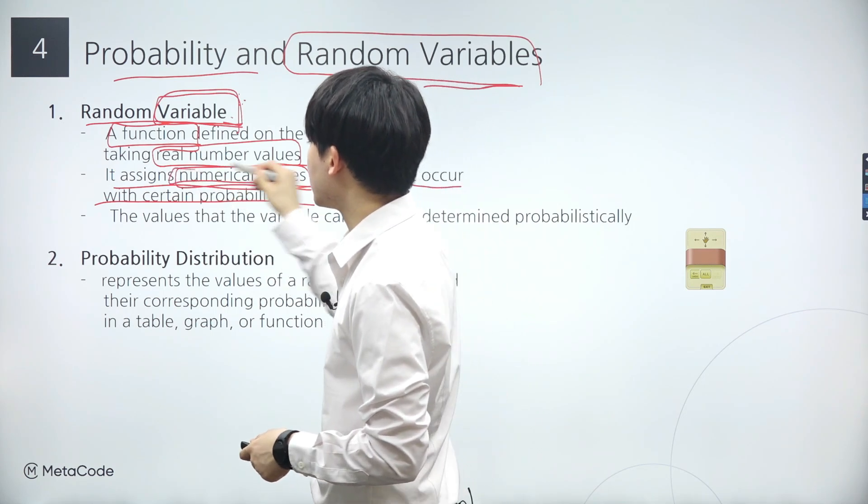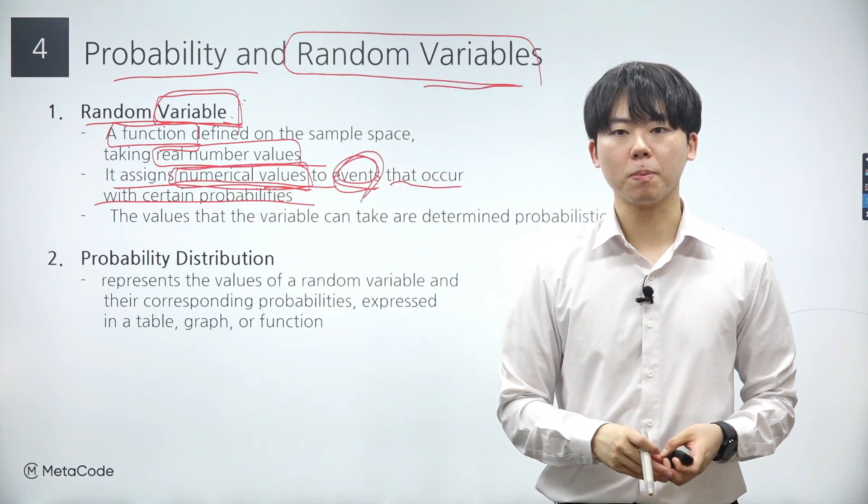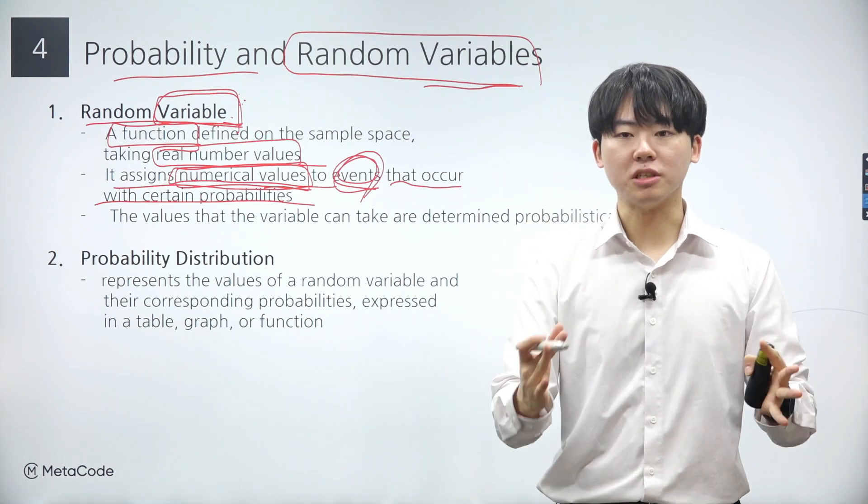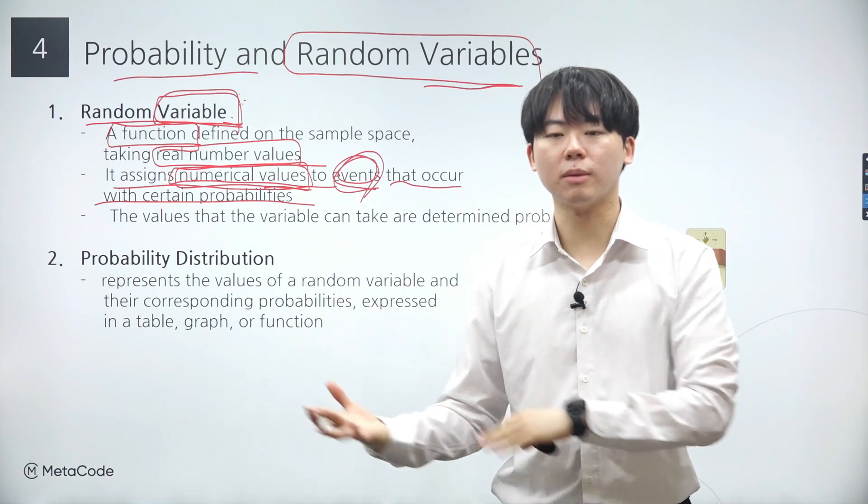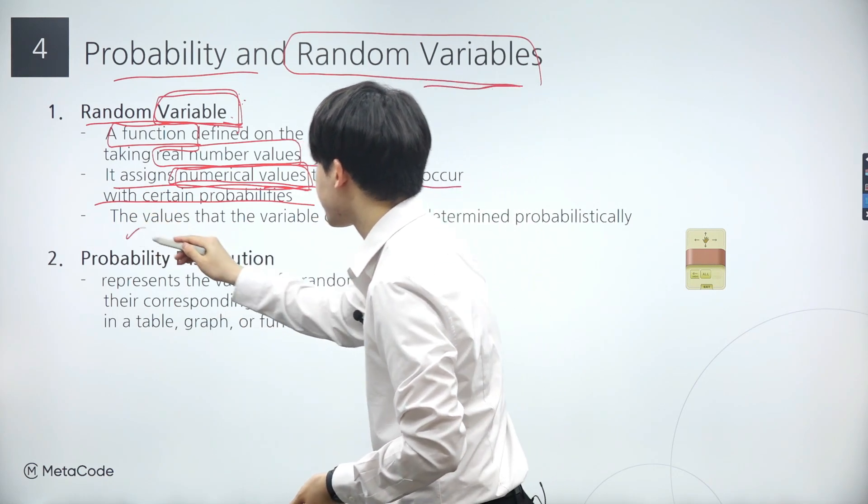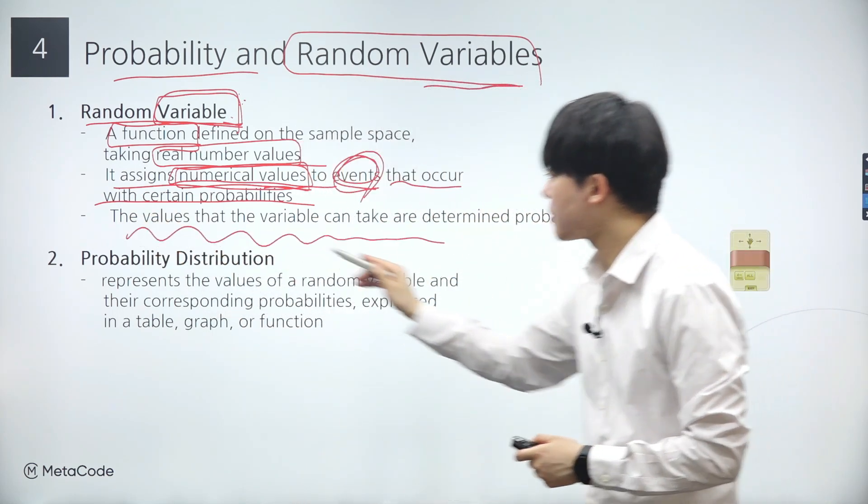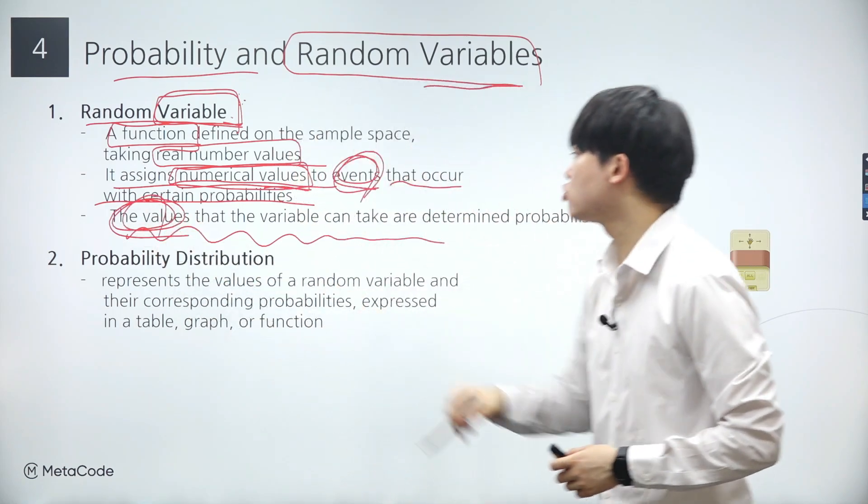While the definition of a random variable may initially seem a bit complex, think of it this way. We start with an event, and a random variable simply assigns a real value to it. Finally, it's important to note that the possible values a random variable can take are determined probabilistically.